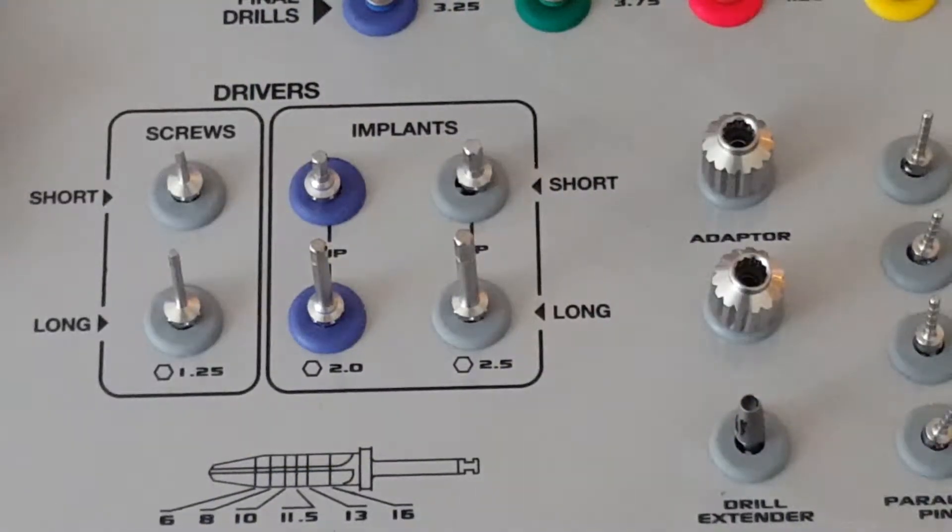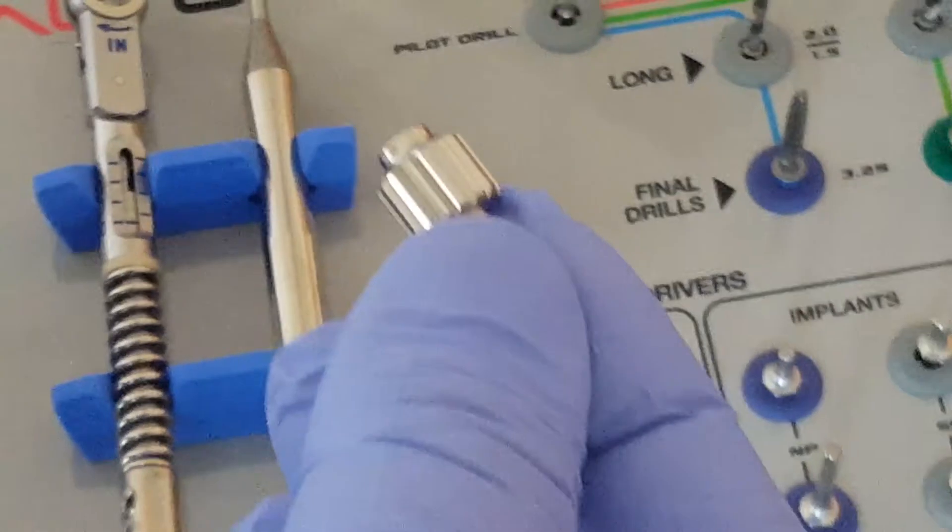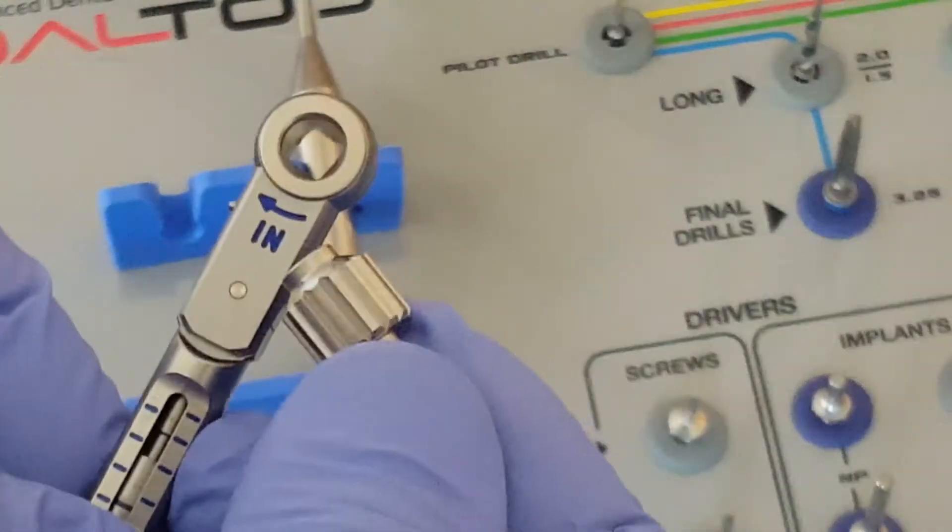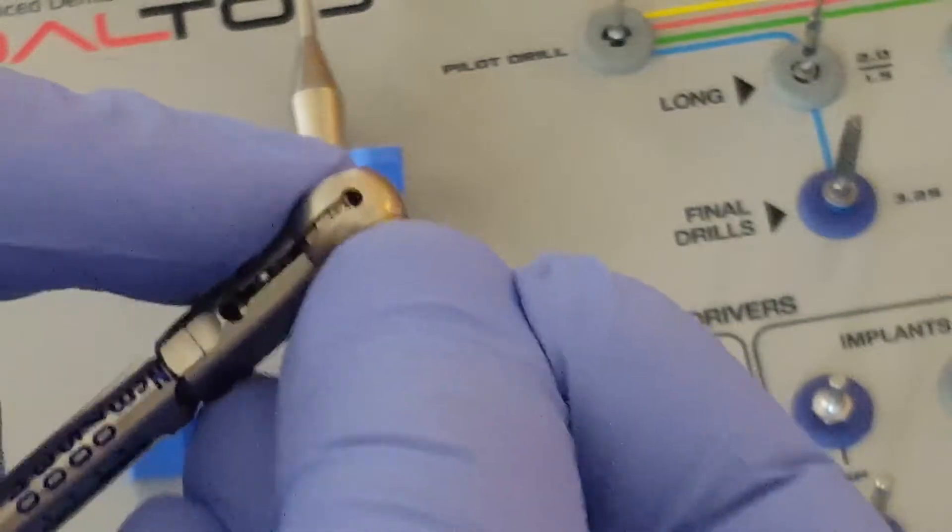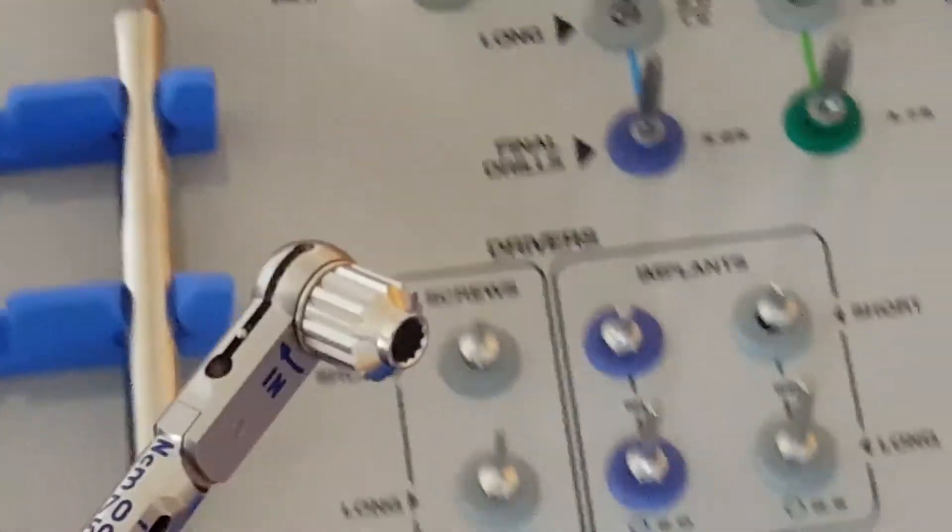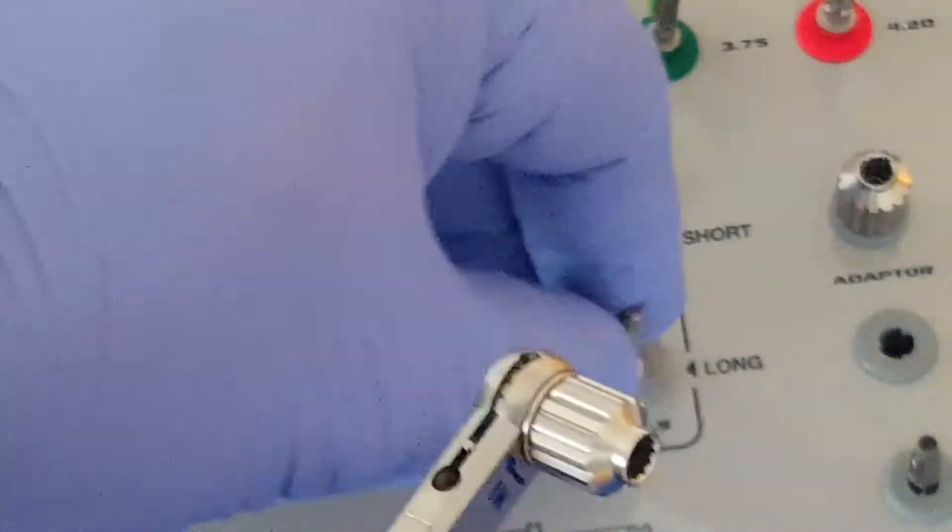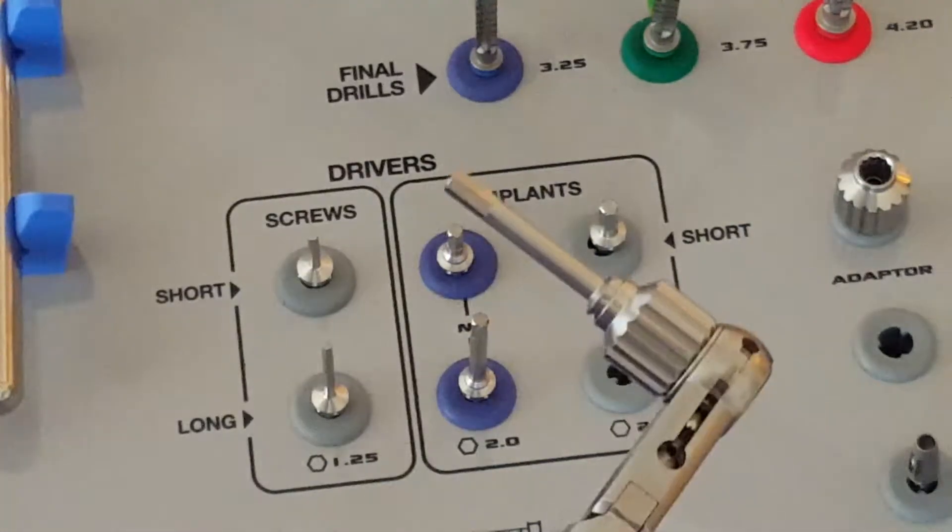If the ratchet is going to be utilized to seat the implant, then the adapter is taken. We take the ratchet. We see one side says in, one side says out. We insert the adapter into the side that says in, and then we pick and select the appropriate implant insertion key. If it's a standard platform, we would take the long or the short and insert that to complete the assembly.